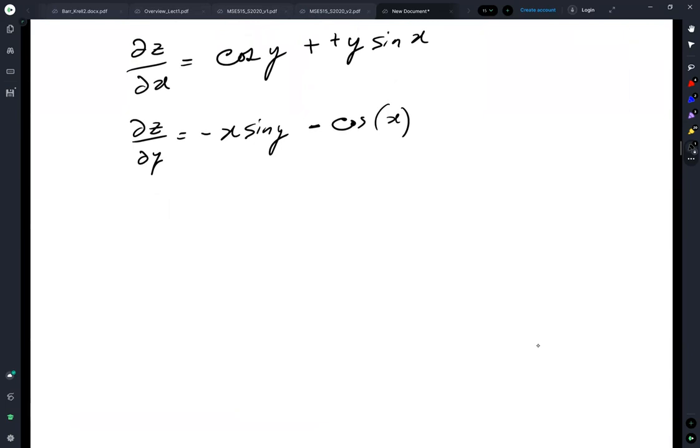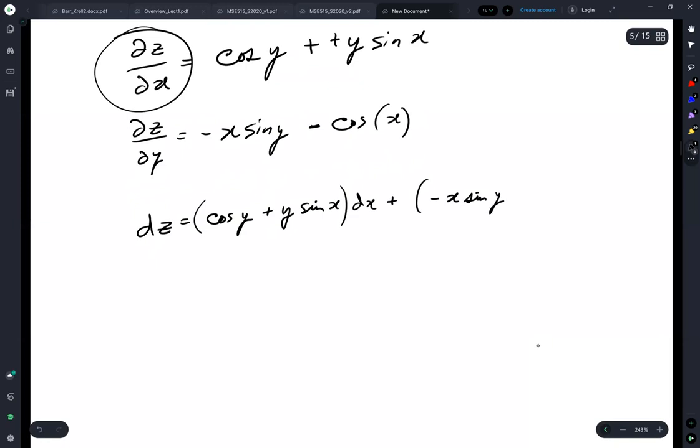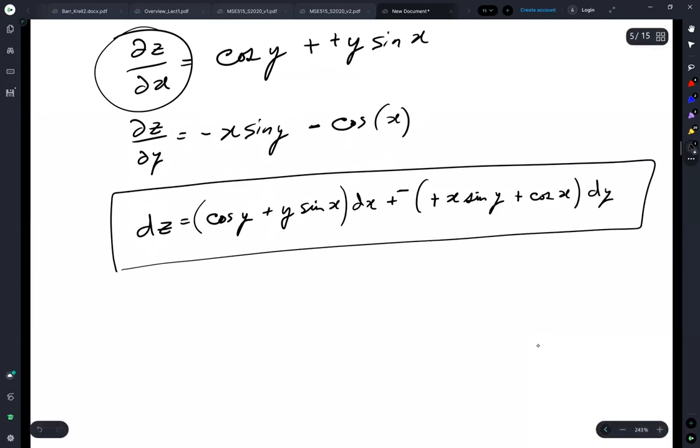So now our total differential is cosine y plus y sine x dx plus minus x sine y minus cosine x dy. And it's usually convenient to move your negative sign out front.